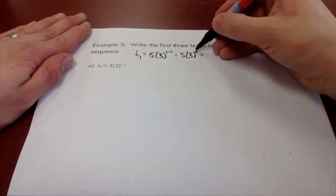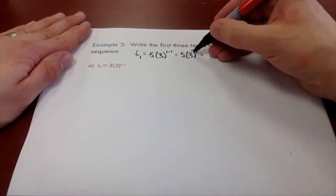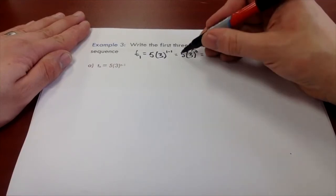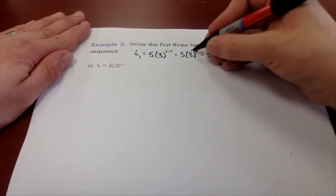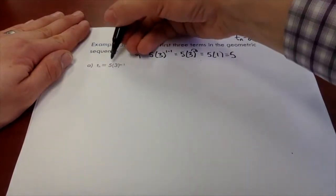Remember with these types of problems, you want to do your exponents first. You don't want to do five times three to the power of zero, you want to do three to the power of zero times five. So we're going to get five times three to the power of zero is one. Therefore our first term is five, just like we anticipated. Remember a is our first term.